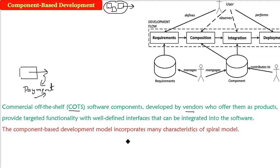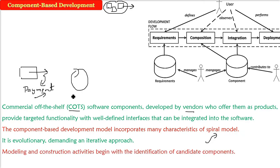This component-based development model incorporates various characteristics of spiral model. The way we develop using component-based is using the spiral model's basic characteristics. Since we are talking about spiral model, it is evolutionary. That's why it has to be an iterative approach because most of the time we combine two components, three components, to make a complete software after combining all the components.